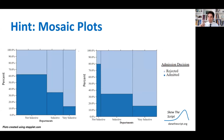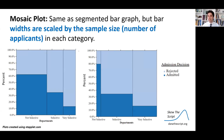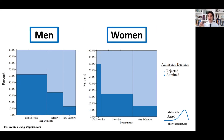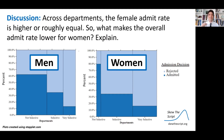As a hint, we have mosaic plots — the same as segmented bar graphs, but the bar widths are scaled by sample size, i.e., the number of applicants in each category among not selective, selective, or very selective departments. There's a mosaic plot for male applicants and one for female applicants. The discussion question: across departments, the female admit rate is higher or roughly equal, as we see in each bar. So how could the overall admit rate be lower for women? Explain your reasoning using these graphs.